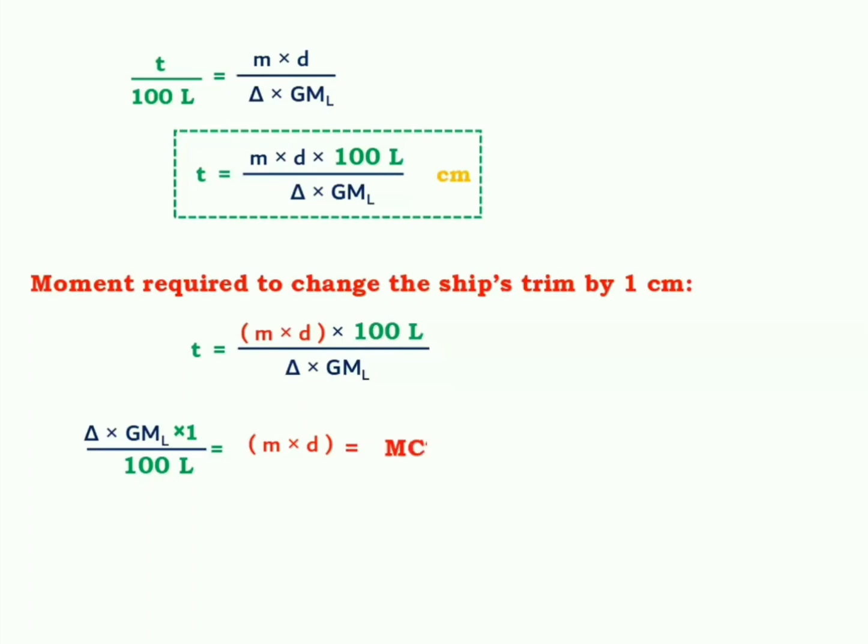What we will see is that m into d equals delta into GM_L upon 100L, which will be of course equals to MCT by 1 centimeter. So finally, the expression for MCT is delta into GM_L upon 100L. This is also you should remember and it is going to be of help.